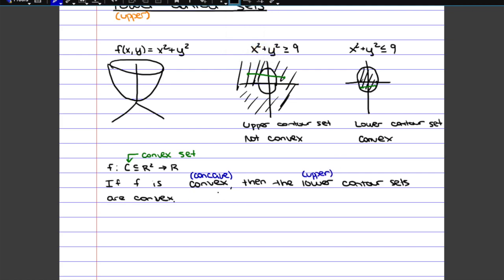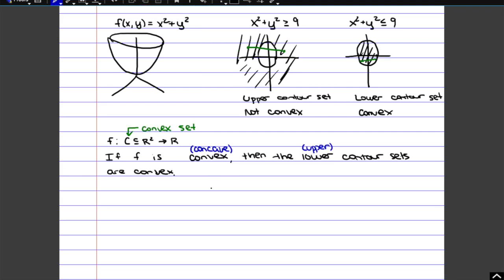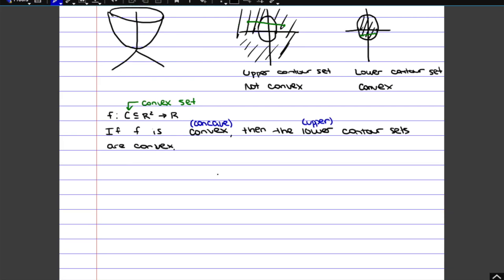So we're going to prove the first one. The other one you could prove the same kind of way though. So we'll see what the difference is after. In order to do this, we're going to use the definition of convex functions and also convex sets.